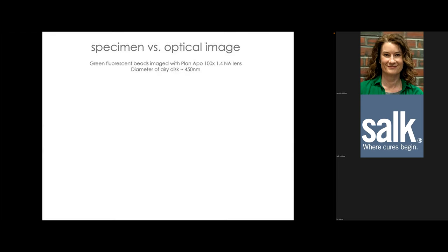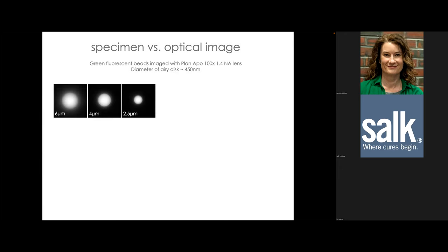This can be demonstrated with fluorescent beads. Here, beads of different sizes in the micron range — well above the resolution limit — are imaged with a high-NA lens whose Airy disc diameter is about 450 nm. Line scans across each bead show that the edges are blurred because every point source making up the microsphere is blurred by the PSF. We can see the size difference between a 2.5 µm and a 6 µm bead, and measurements using the full-width at half-maximum (FWHM) are quite accurate.